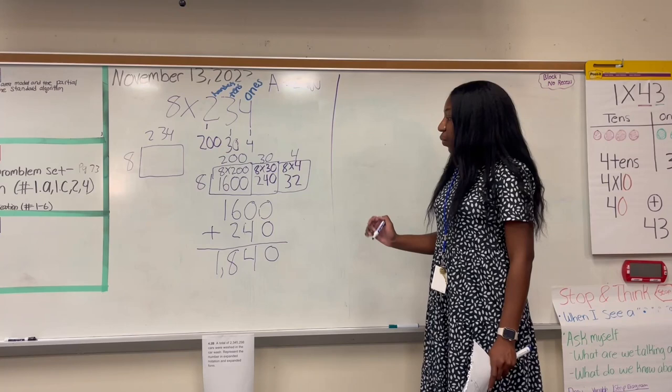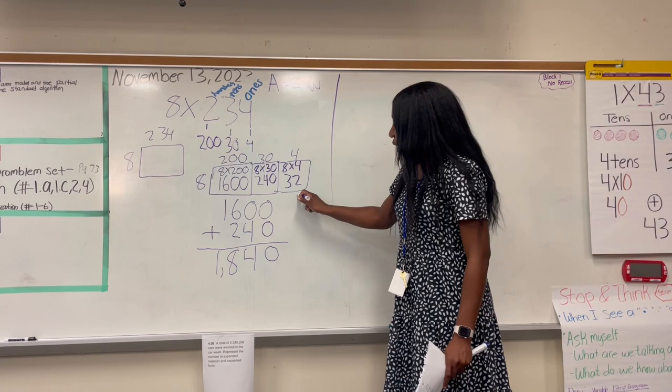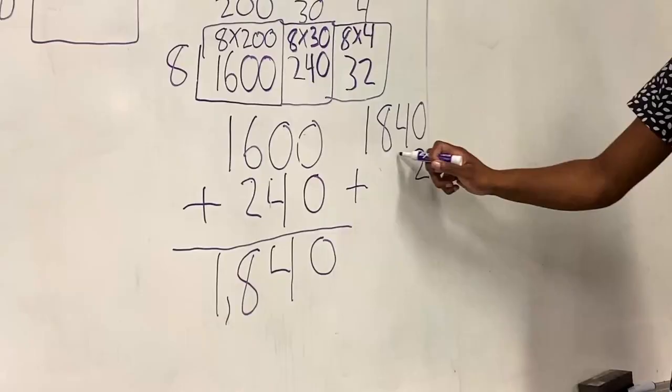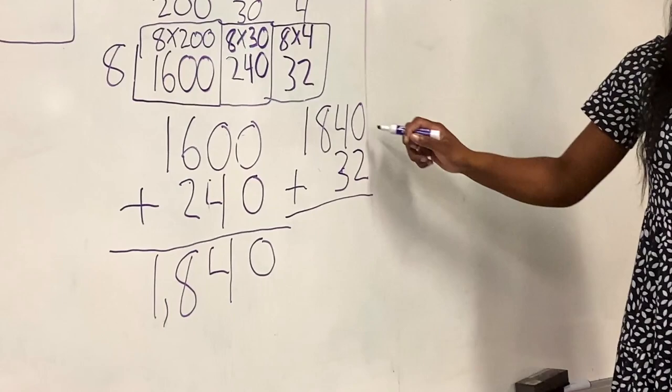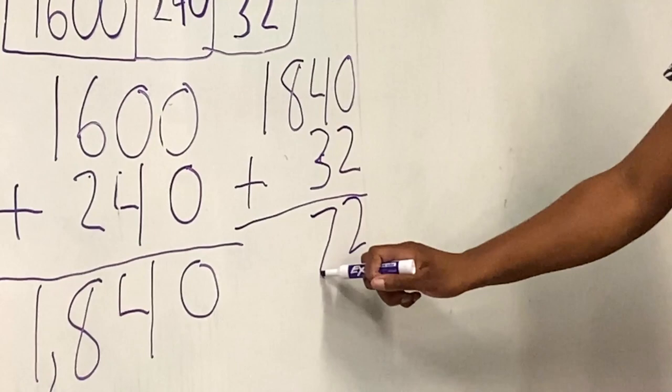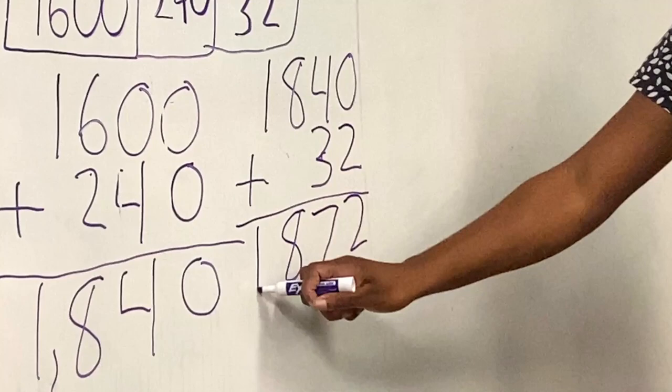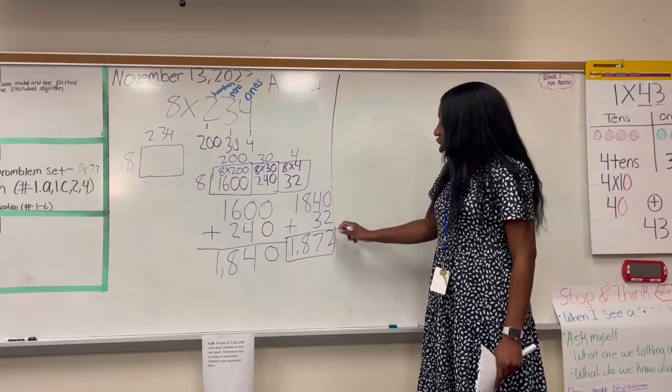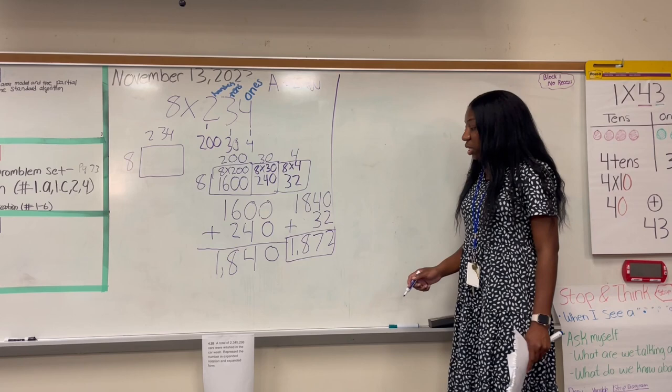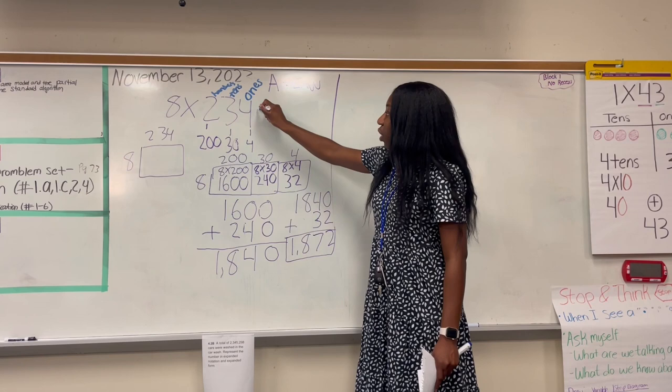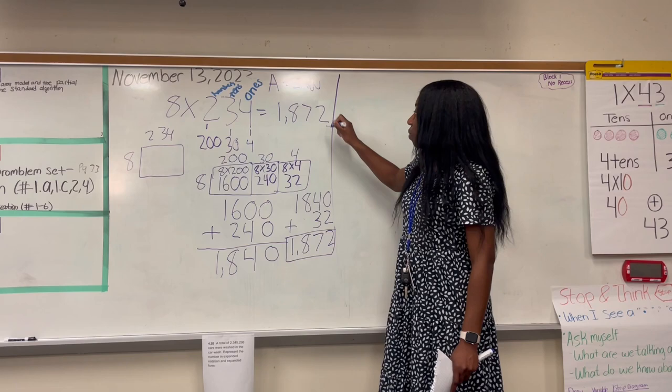But remember, we're not going to stop there because we have not added our 32. So I'm going to write that number right here, plus 32. Zero plus two is two. Four plus three, seven, eight. I'm just going to drop it since there's nothing there. I'm also going to drop the one. So that means my final answer is 1,872. That goes back to the question right here. Eight times 234 equals 1,872.